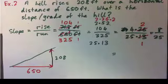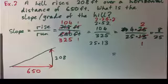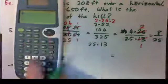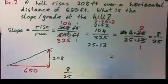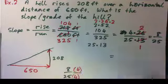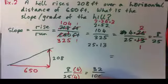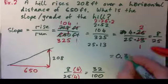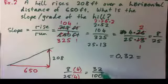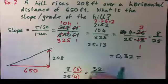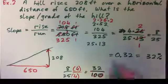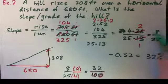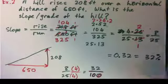Writing 8 over 25 as a decimal and percentage: either do 8 ÷ 25 = 0.32, or multiply top and bottom by 4 to get 32 over 100 = 0.32. Per cent means per 100, so 0.32 is 32%. Please give all your answers as a fraction in lowest terms, a decimal, and a percentage.